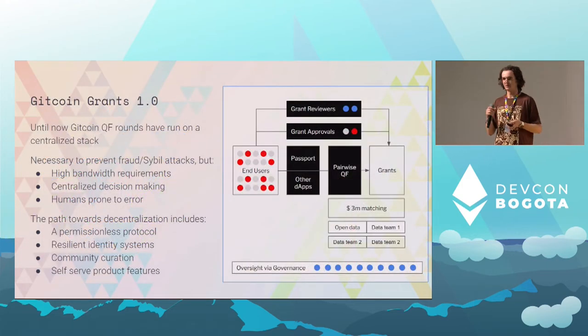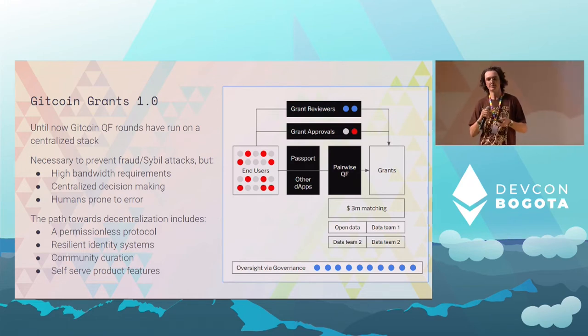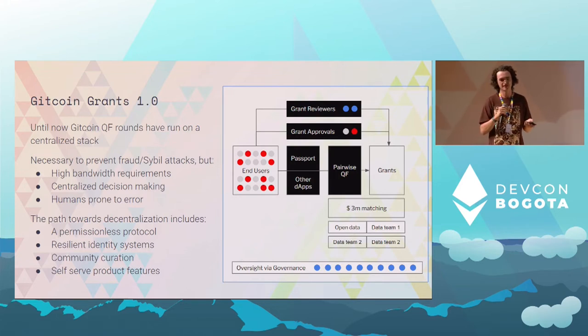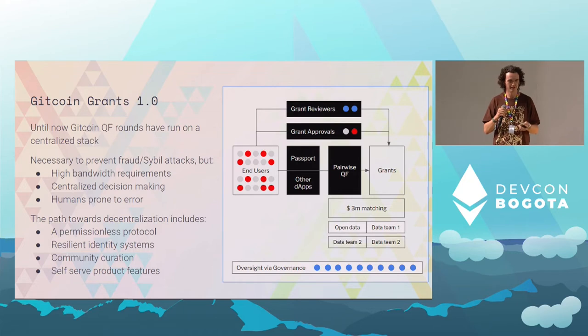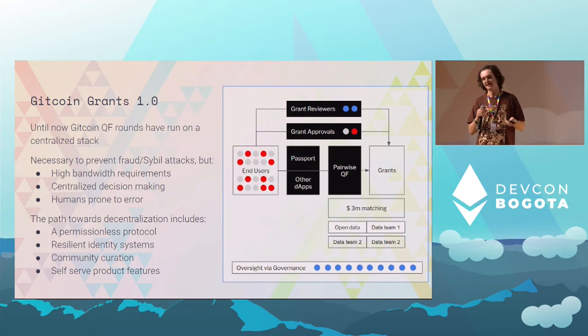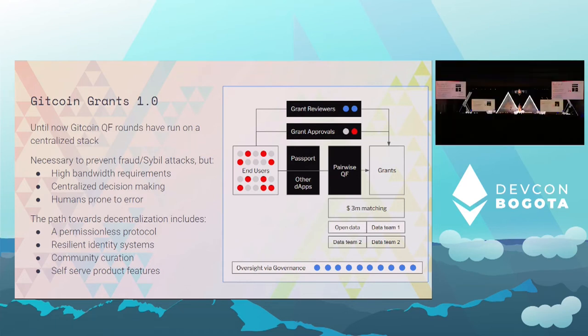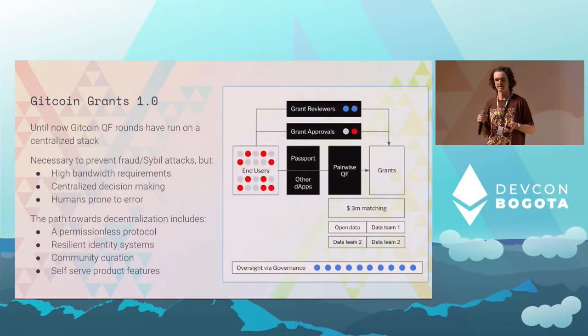Gitcoin grants right now is still fairly centralized — but that's okay. We can't go to governance for every single grant decision. Governance helps direct eligibility requirements, and then we have a centralized team that must be trusted to act on those decisions. But it's a high-bandwidth task for our team, humans are prone to error, it's centralized, and it's not what we want to be doing with our time. As we move towards decentralization, we're thinking about launching a permissionless protocol. We have resilient identity systems in the works, community curation, and self-serve product features so people can choose how they run their own rounds.